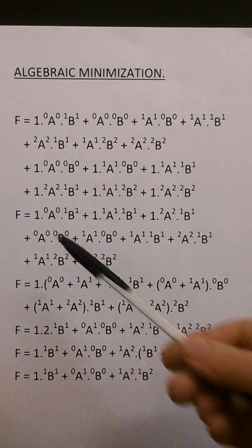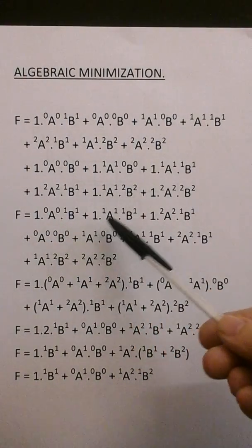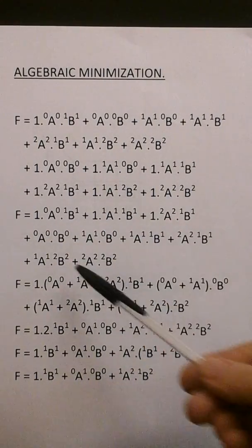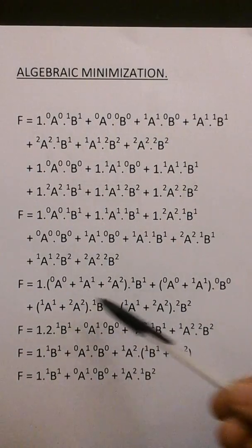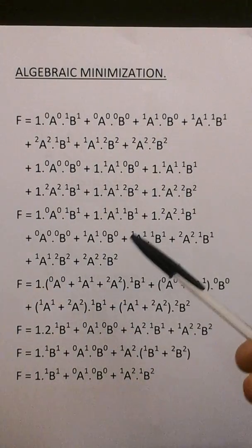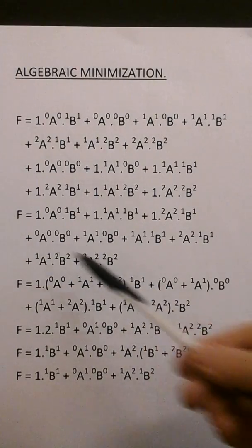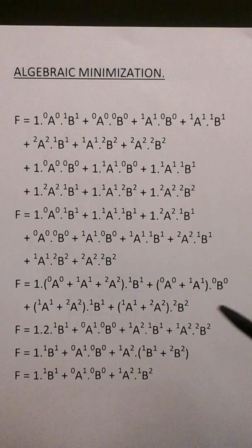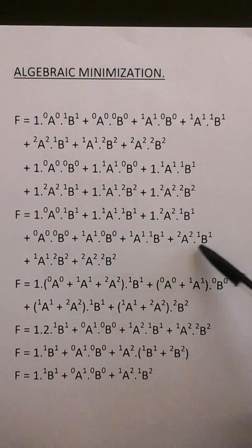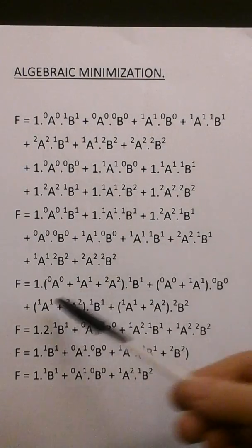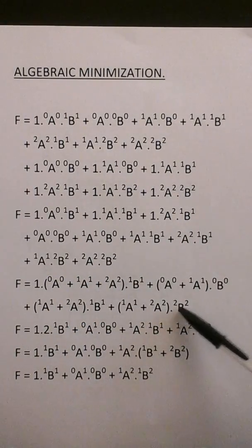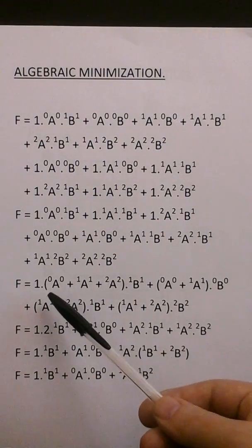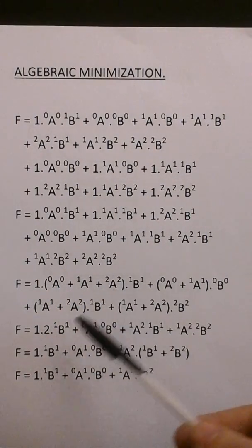So what does that mean? Well I can factorize a 1 and a B1 from these three and collect the A terms here. So I've factorized a 1 and a B1 and collected the A terms. I can factorize a B0 here and collect the A terms, and a B2 here and collect the A terms there, and a B2 here and collect the A terms there. So all this reduces to 2.